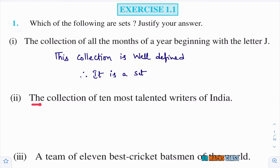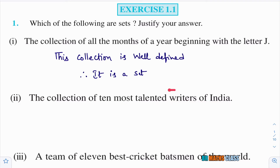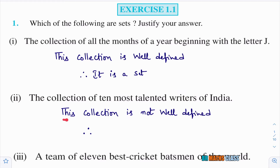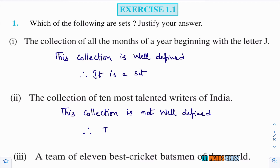The collection of all months of a year beginning with the letter J — January, June, and July. These three months are clearly defined and do not vary from person to person. This collection is well defined; therefore, this collection is a set.